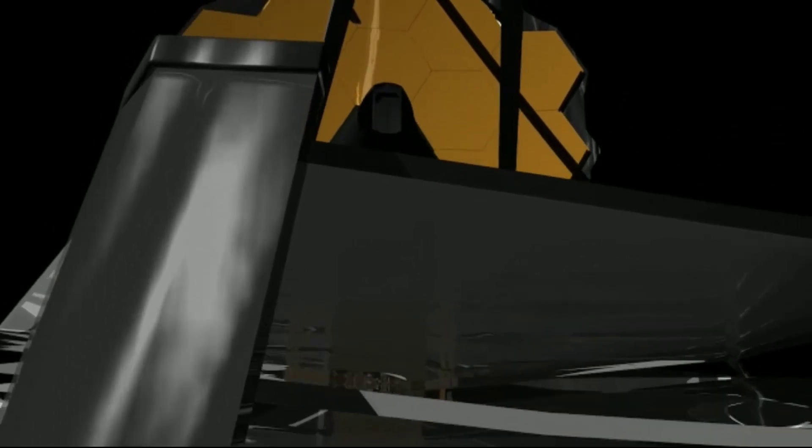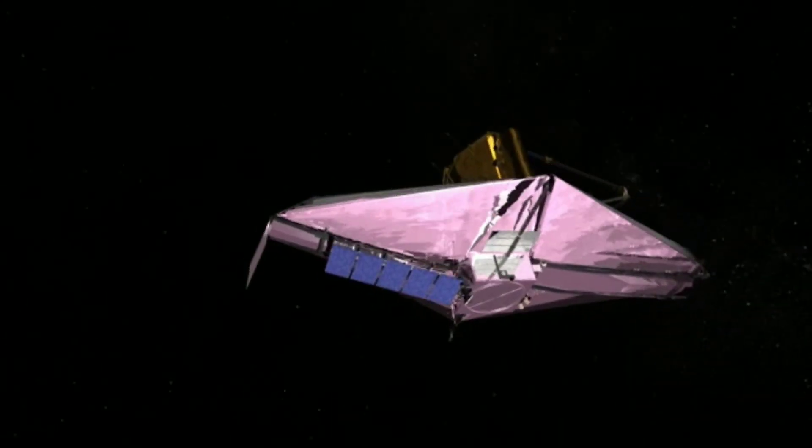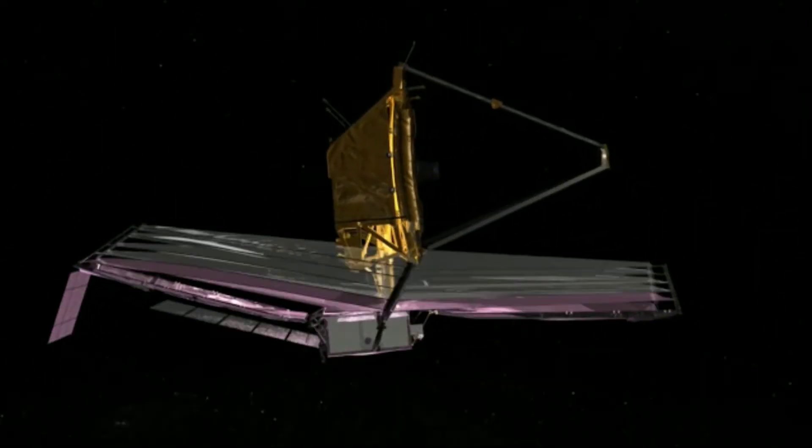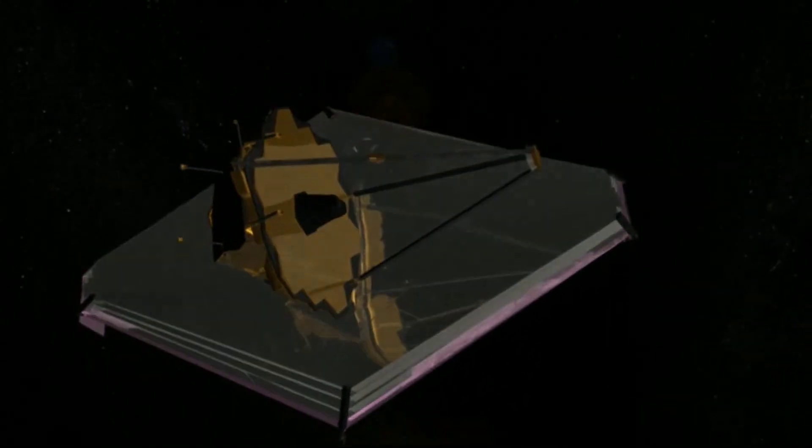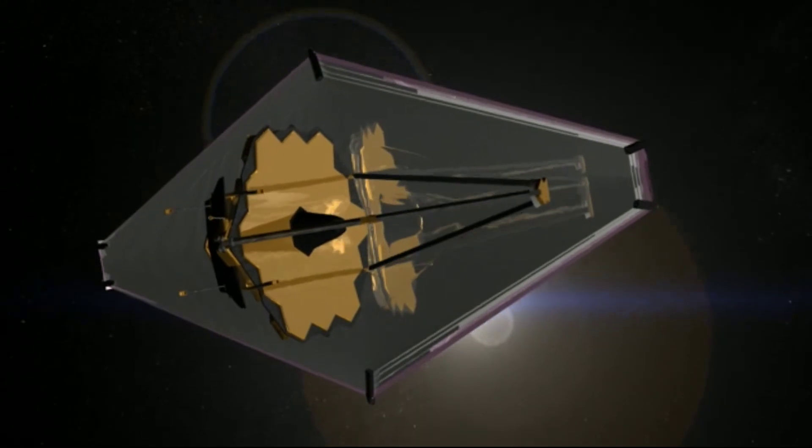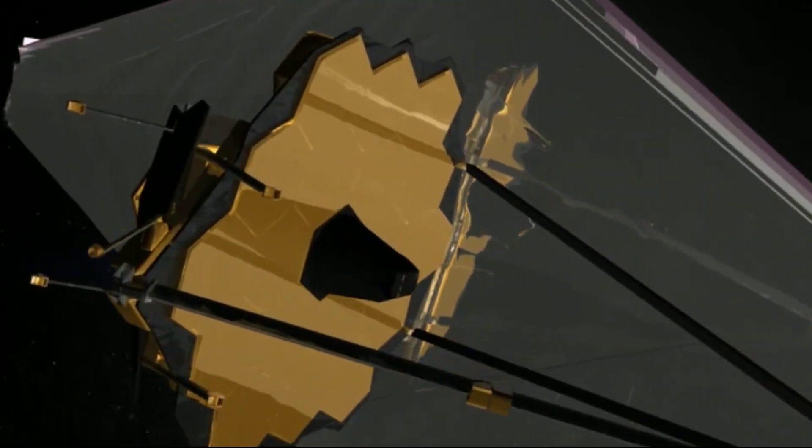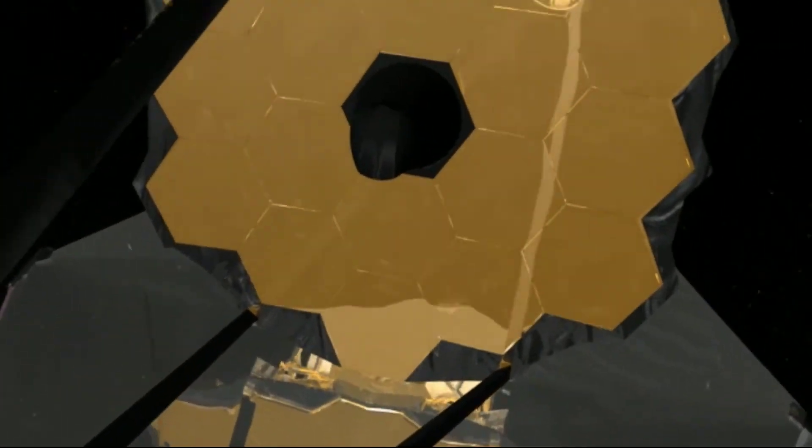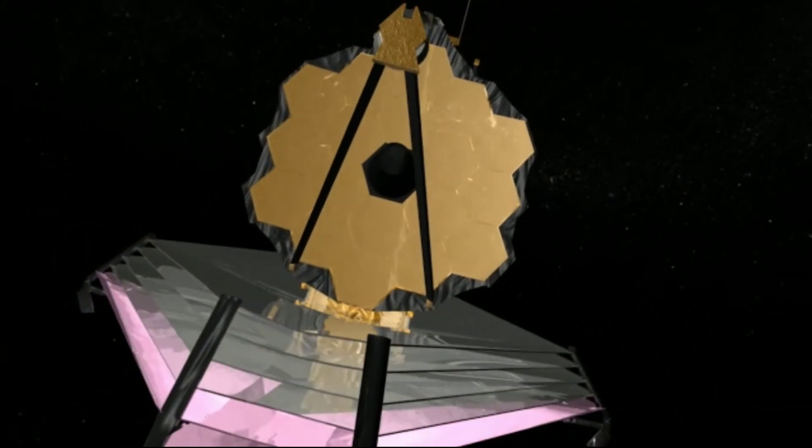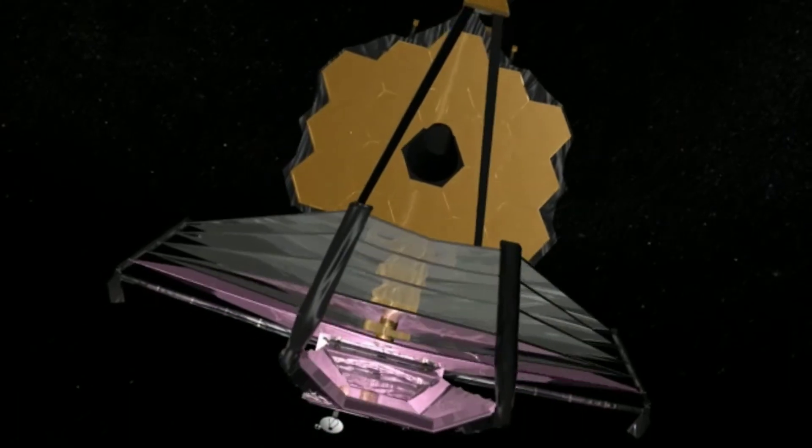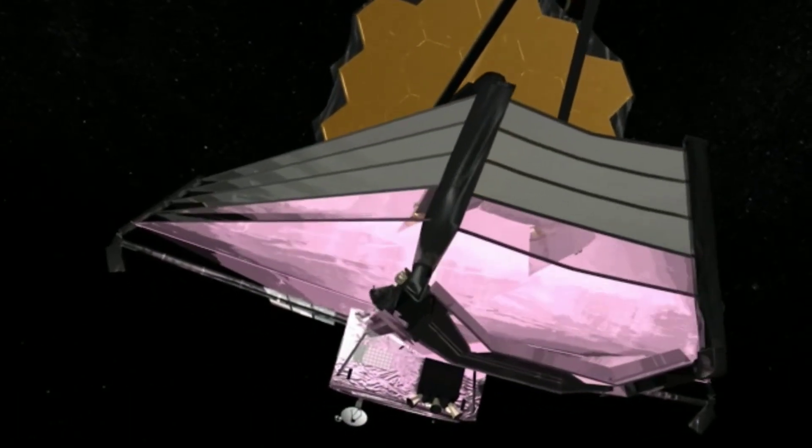The large primary mirror of the Webb telescope will be passively cooled by a sun shield to about 45 Kelvin. It will be sensitive to light from 0.6 to 28.5 micrometers. The sharp infrared vision of the James Webb Space Telescope will help astronomers address a number of key questions concerning our place in the evolving universe.